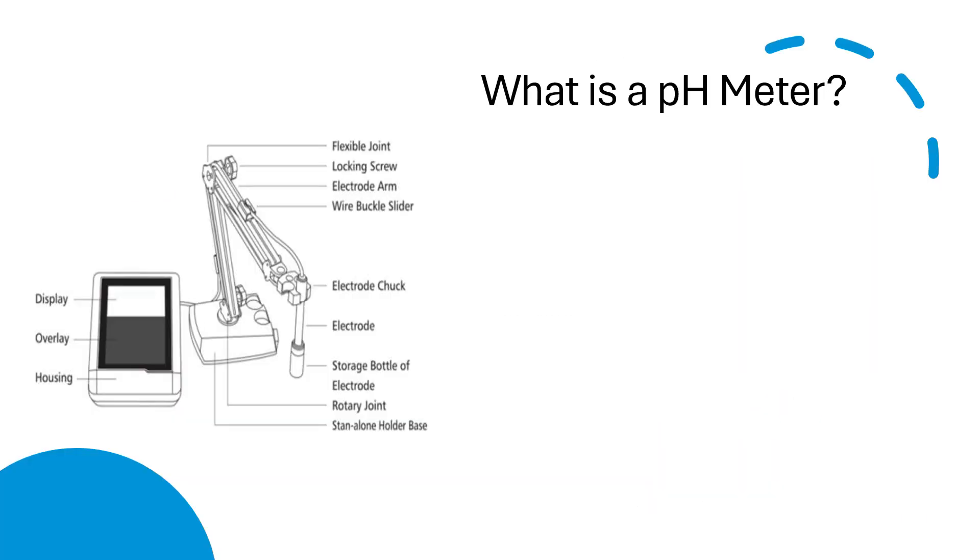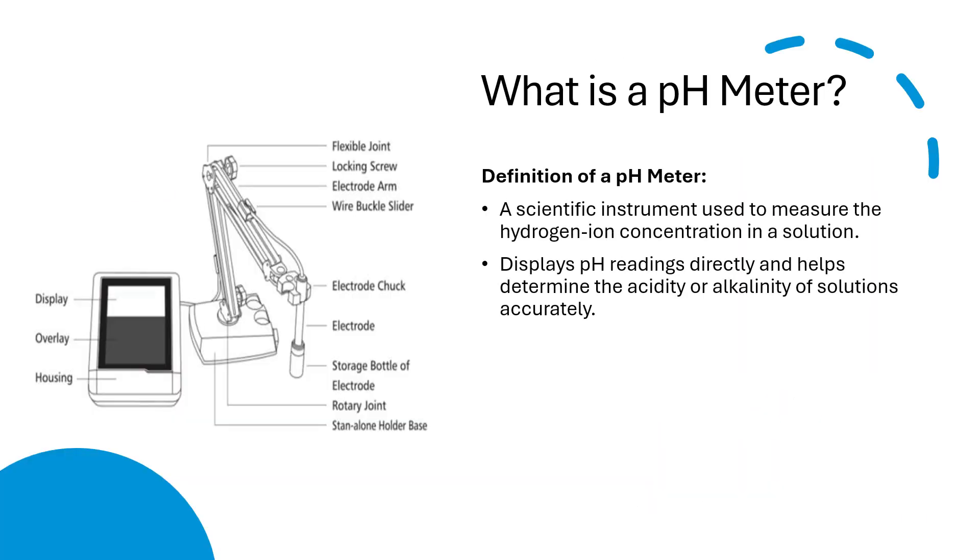Now let's understand the definition of a pH meter. A pH meter is a scientific instrument designed to measure the hydrogen ion concentration in a solution by directly displaying pH readings. It accurately shows us whether a solution is acidic or alkaline.